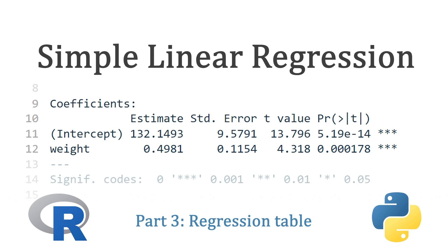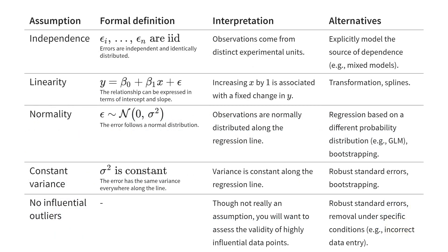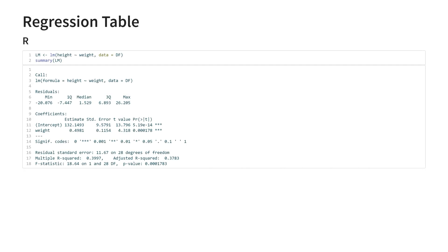In the last video, we went over the assumptions required for valid inference from a simple linear model. Let's for the moment assume these are reasonable and finally have a look at the output of the model, called a regression table. This might look like a lot at first, but the most important part is here in the middle — the coefficients.